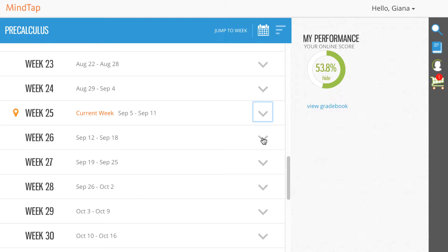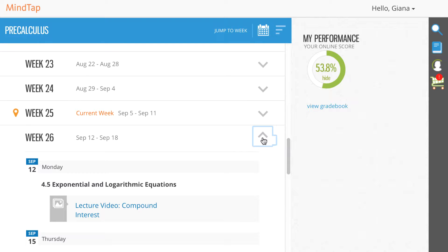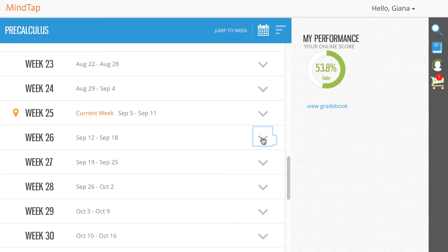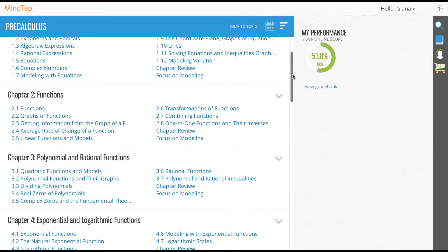At the top right of the learning path, click the Topic View icon to find the full contents of the course broken down by chapter and section.